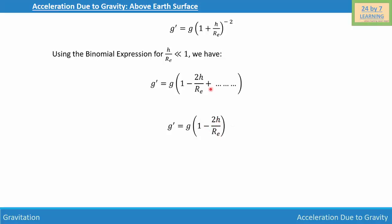We neglect all terms after 2h/Re because h/Re is already very small compared to 1, so all subsequent terms are negligibly small. Therefore, the final expression for acceleration due to gravity above Earth's surface is g' = g(1 − 2h/Re).